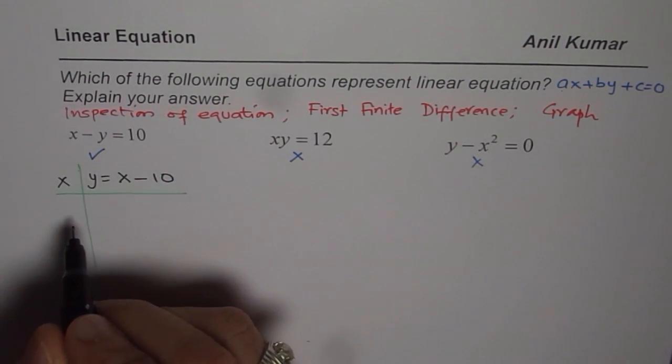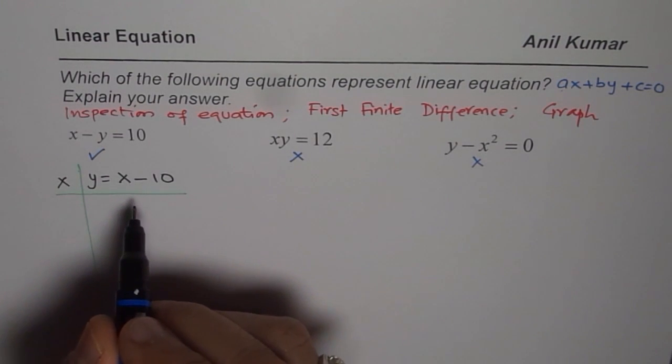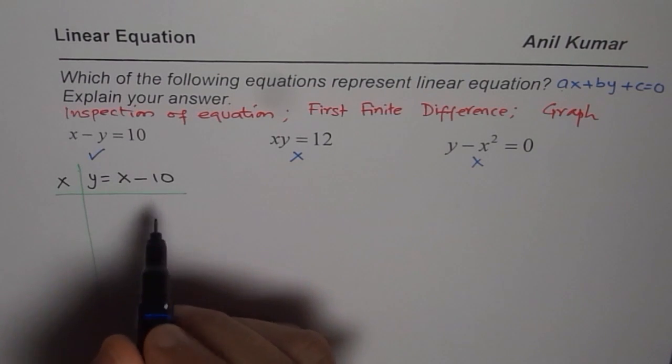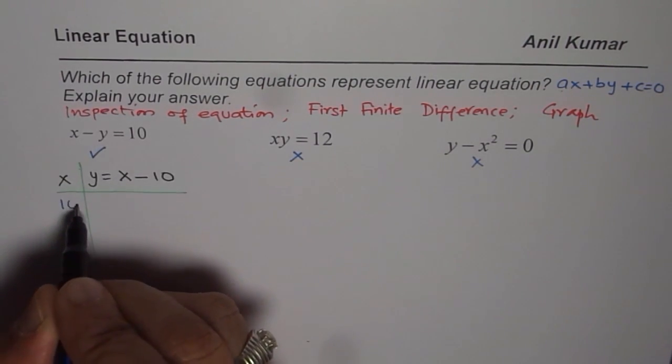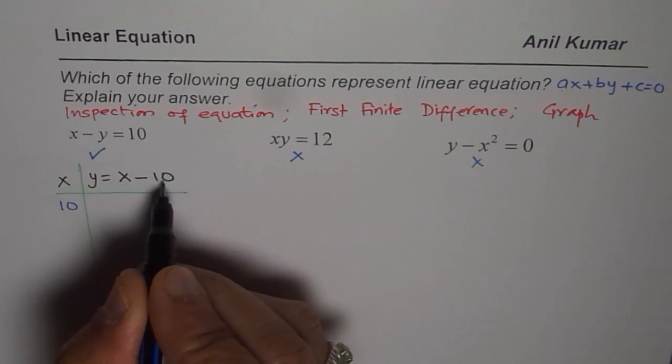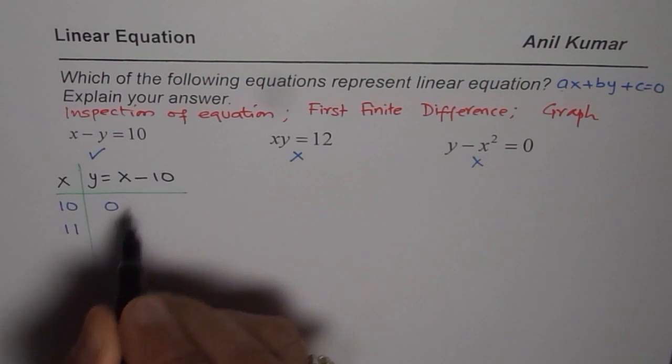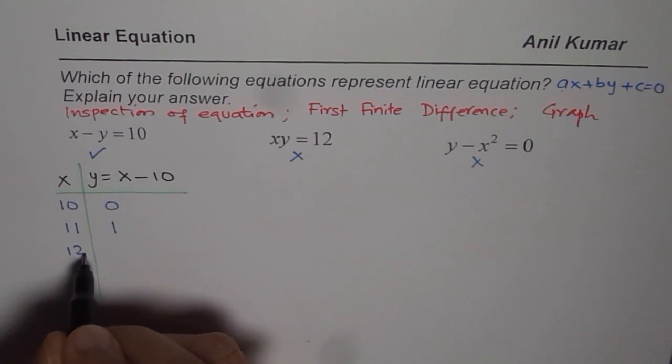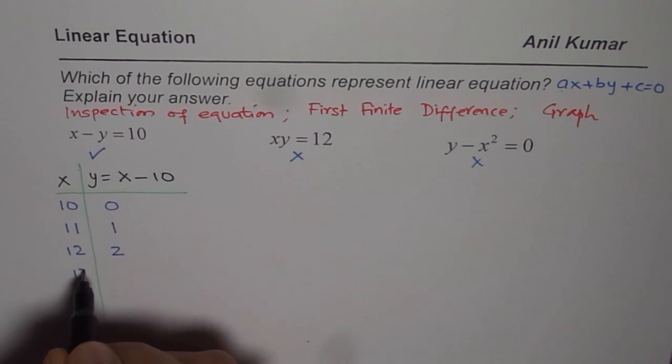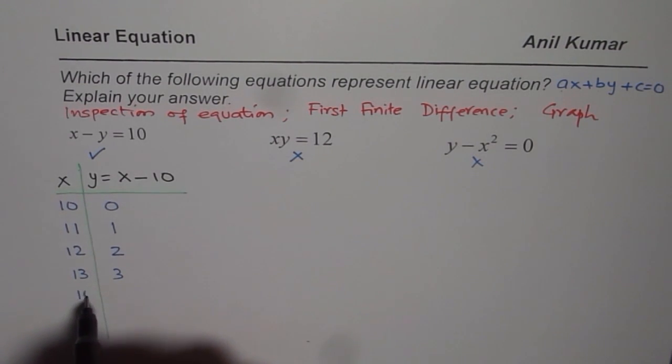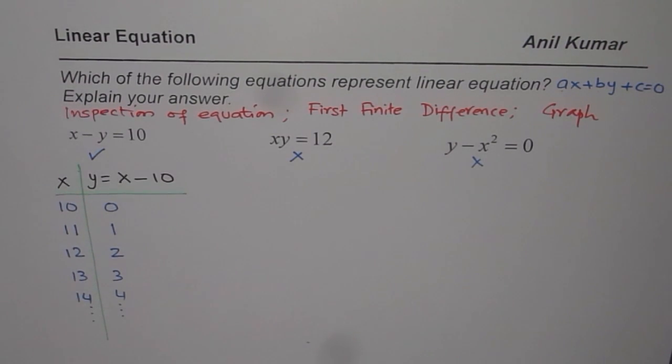Now we will take some values of x and find the values of y. Let us start with values like, let us take 10. It is easy. So we will have all positive numbers. So x as 10, y will give me 10 minus 10 as 0. Then, let us take x as 11, 11 minus 10 is 1. 12 will give us 2. 13 will give us 3. 14 will give us 4 and so on.